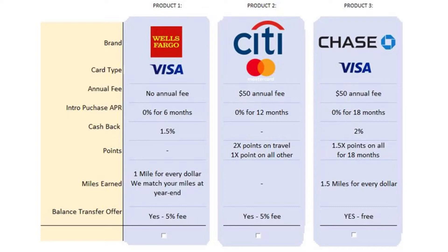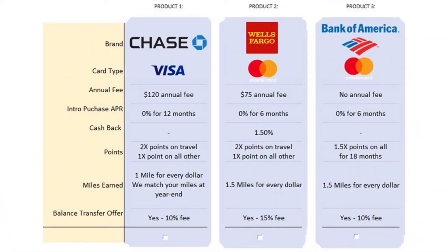When survey takers review these, they select the one they'd prefer, and then a set of new credit cards are shown again with all the information. Each survey taker makes about eight to ten choices.